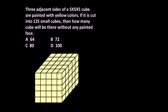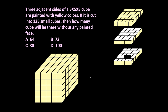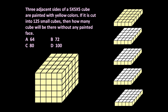Now it is cut into 125 small cubes. If we cut it into 5 slices — 1, 2, 3, 4, and 5 — each slice will have 25 small cubes, that is 5×5 = 25. So each layer is having 25 small cubes. Now, how many cubes will be there without any painted face?